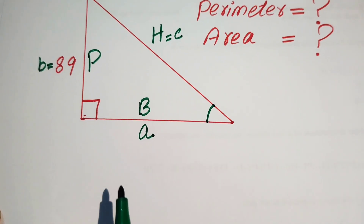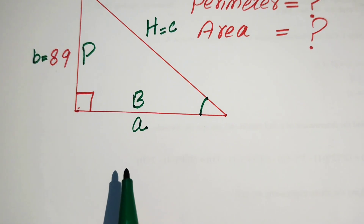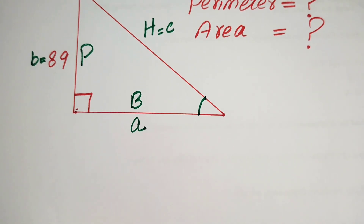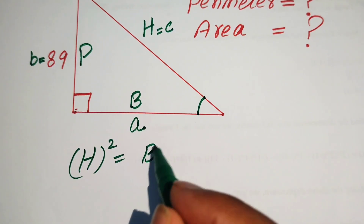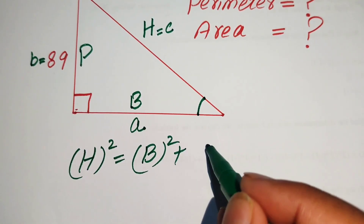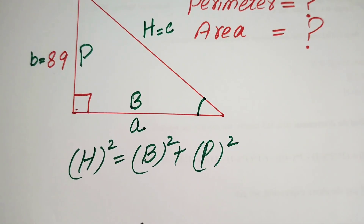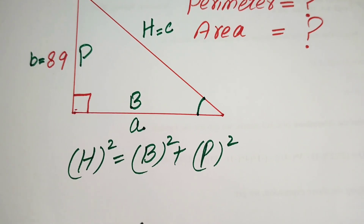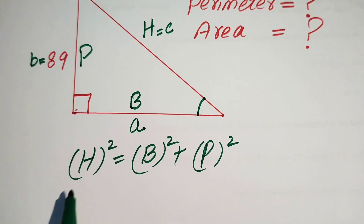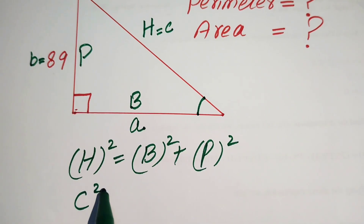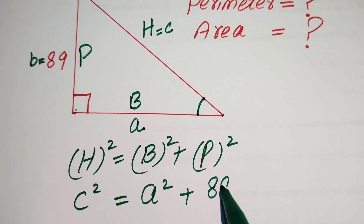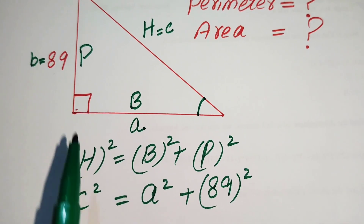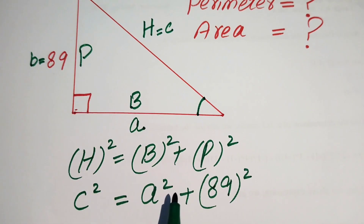Now we simplify and find the perimeter and area. First we use the Pythagorean theorem, which states: hypotenuse squared equals base squared plus perpendicular squared. Substituting our values: c² = a² + b², and since b equals 89, we have c² = a² + 89².